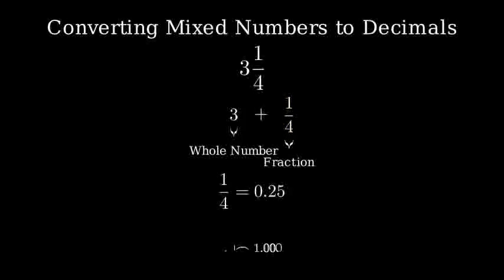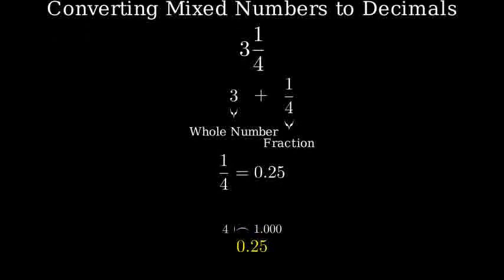Let's first convert the fractional part to a decimal. To do this, we divide 1 by 4. 1 divided by 4 equals 0.25.